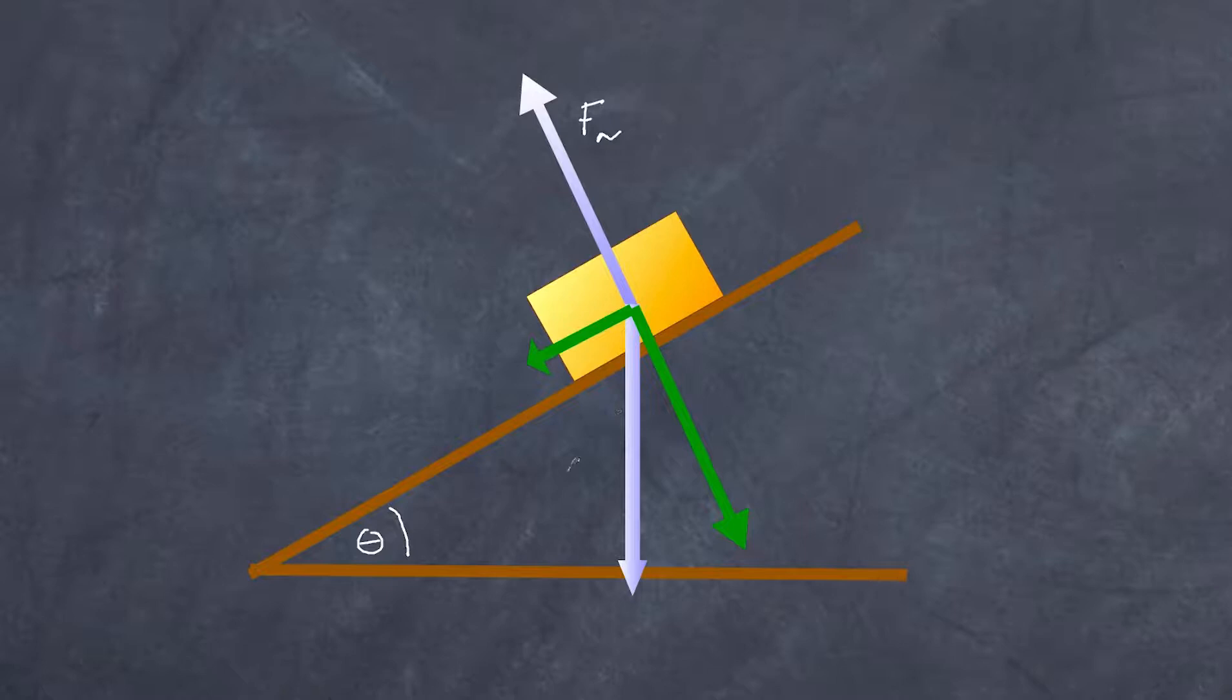If this is theta right here then we can see that the angle here or the angle here whether we look at it from this perspective or this perspective it's the same angle that's 90 minus theta. That means that this angle right here is equal to theta.